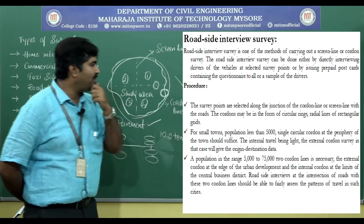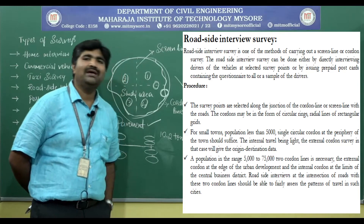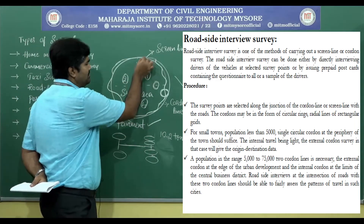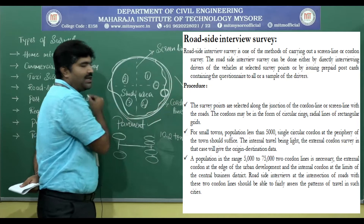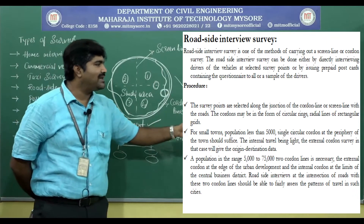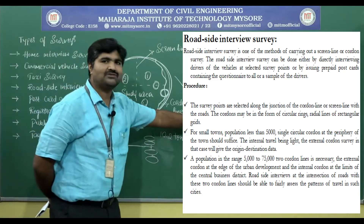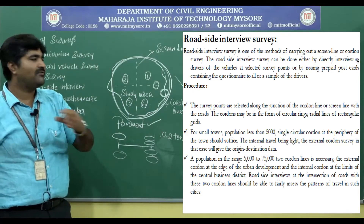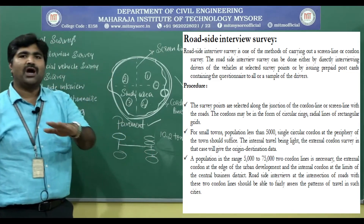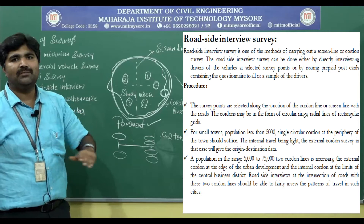For small towns where the population is less than 500, a single cordon line at the periphery of the town should be sufficient. Because internal travel is light there, the travel pattern will be very less. The external cordon line survey in that case will give proper origin and destination data — the starting and end points.